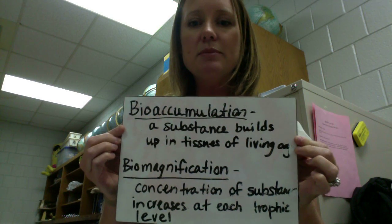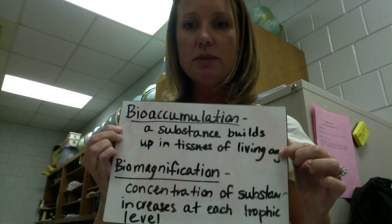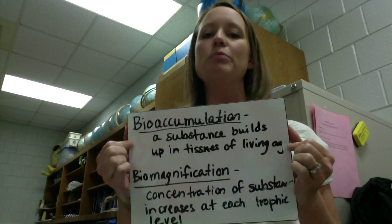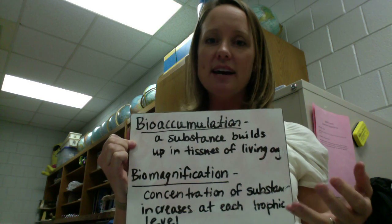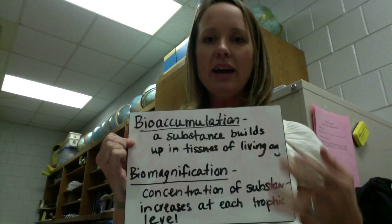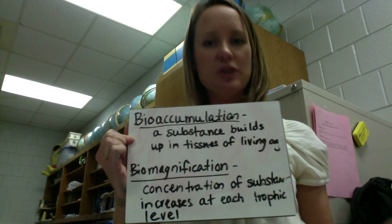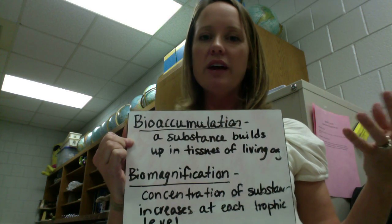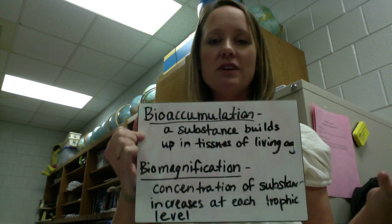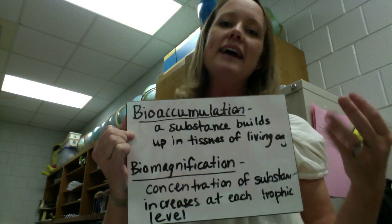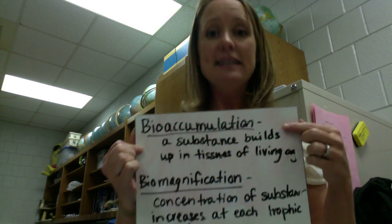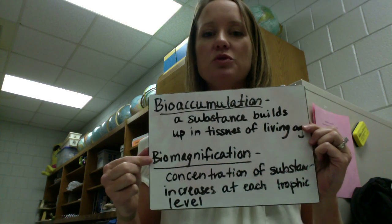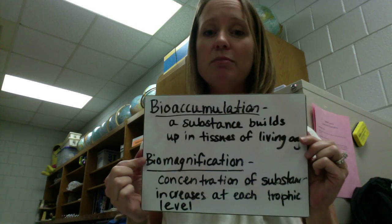Two more terms: bioaccumulation is when any substance builds up in the tissue of a living organism. For example, DDT is a pesticide that was once used. It would run off from the land into the water where it would build up in the tissues of fish. If a bird of prey swooped down, grabbed a fish, and ate it, then that DDT would also accumulate in its tissues. When a substance is passed from one trophic level to the next, you get biomagnification.